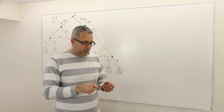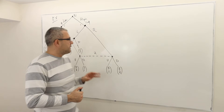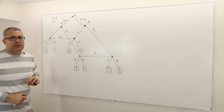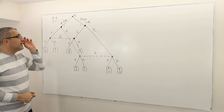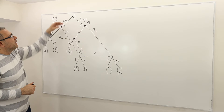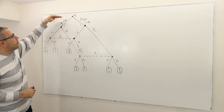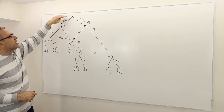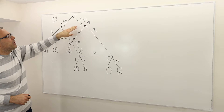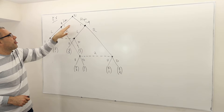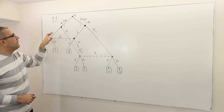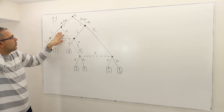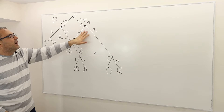Let's now focus on this example. This is a game with incomplete information, different than the previous examples we had. Nature moves first and determines the type of player one — either the low type or the high type. Then player one observes its type and chooses left or right. This is the low type's choice; this is the high type's choice.